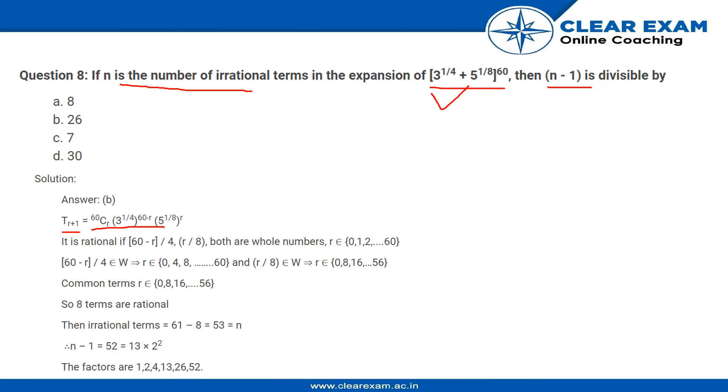We need to find the number of irrational terms. Irrational terms are numbers that contain square roots or any roots that cannot be simplified.